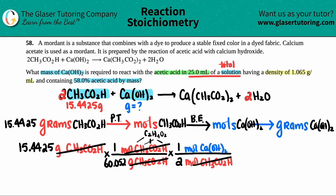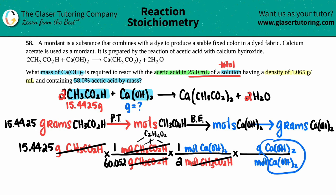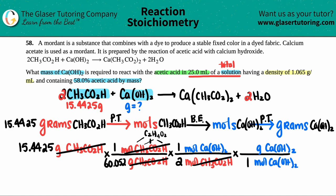Cancel out the units and do one more step: go from moles of Ca(OH)₂ to grams. Multiply by a ratio — put moles of Ca(OH)₂ on the bottom and grams of Ca(OH)₂ on top. This is a periodic table conversion: 1 mole of Ca(OH)₂. Its molar mass is 1 calcium (40.08) + 2 oxygens (2 × 16) + 2 hydrogens (2 × 1.008) = 74.096 g/mol.